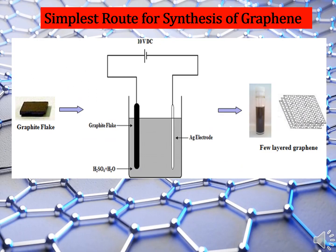Now we move to the simplest route for synthesis of graphene. Graphene can be synthesized from a graphite flake using a modified electrochemical exfoliation method. In this method, a silver electrode is used as a cathodic electrode, though any metal electrode can be used. For electrochemical exfoliation, the graphite flake and silver electrode are inserted into ionic solution with a separation of approximately 4 cm. The ionic solution is prepared by diluting 5 ml of sulfuric acid of analytical grade in 100 ml of deionized water. The process is carried out by DC bias using 10 volts at room temperature of 303 kelvin. The exfoliated graphene is collected through cellulose nitrate filter paper, washed with deionized water, and the final suspension is dried at 373 kelvin for 2 hours. Graphene is then ready for use.